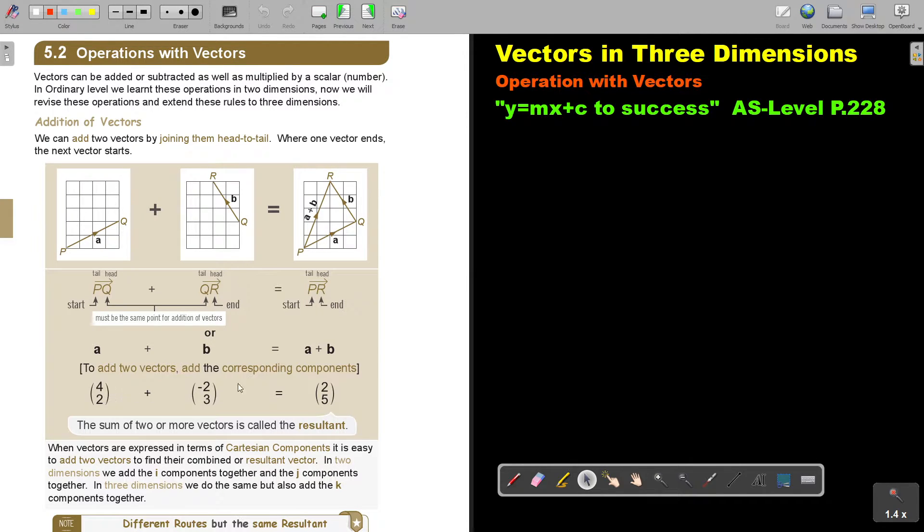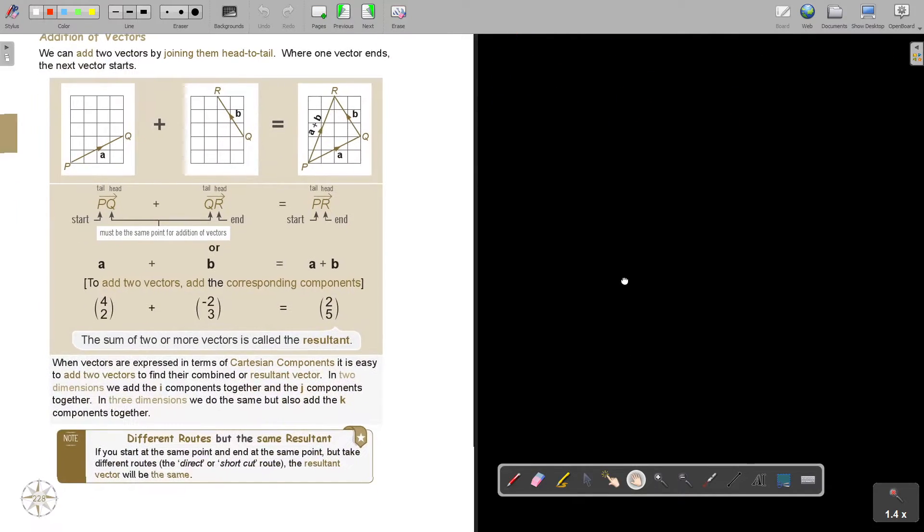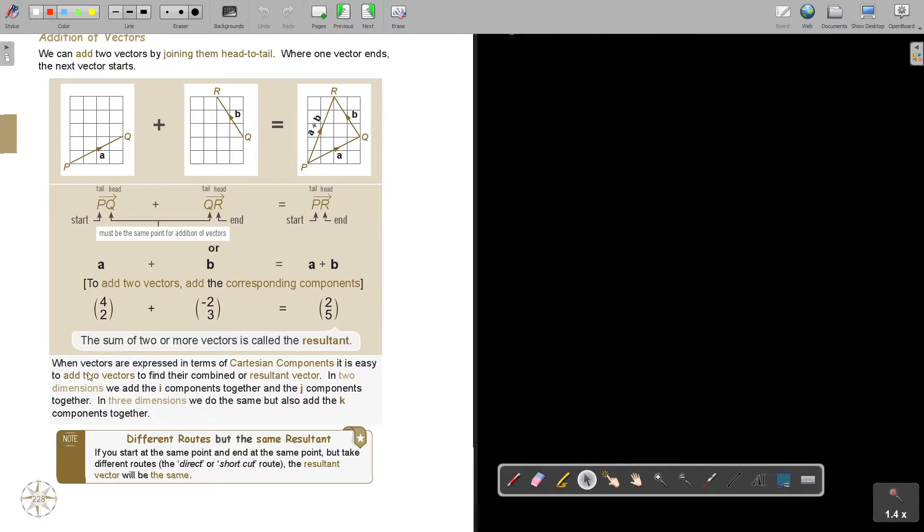In terms of vectors, you can check, because if I add, I get two, and if I say two plus three, the sum of the two or more vectors is called the resultant. When vectors are expressed in terms of Cartesian components, it's easy to add the two vectors to find their combined or resultant vector. In two dimensions, we add the I components together and the J components together. In three dimensions, we do the same, but also add the K components together.